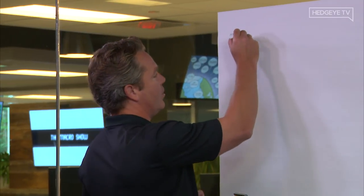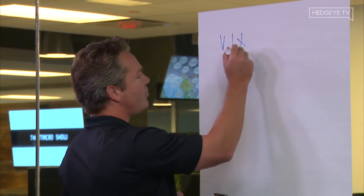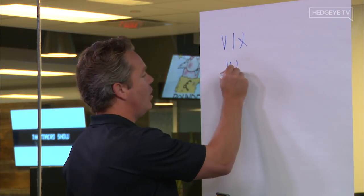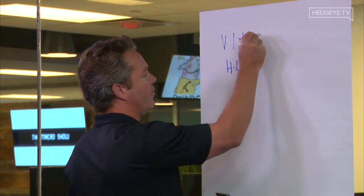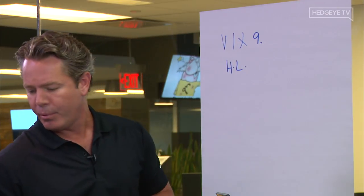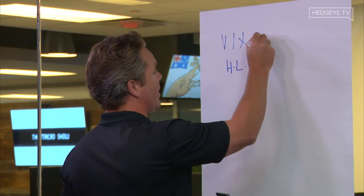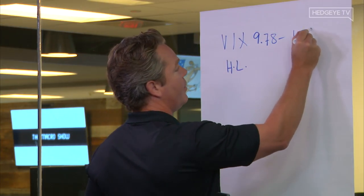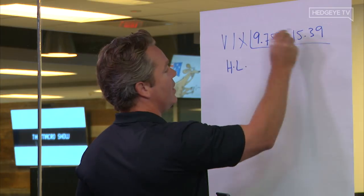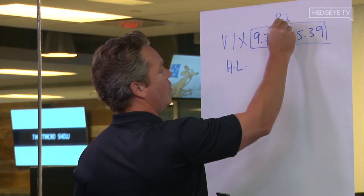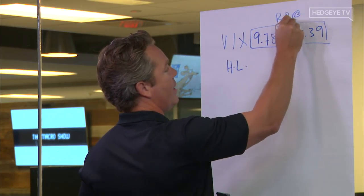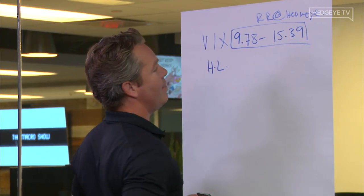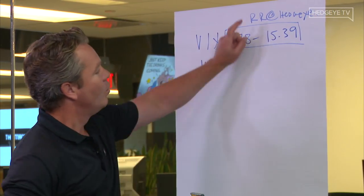Just to hit on volatility point number three — as I said yesterday, it is signaling higher lows. We have a 9.78 to 15.39 risk range. That is the risk range at HedgeEye — copyright until I'm dead.